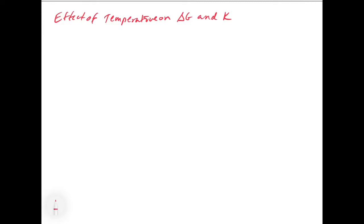In this video, we're going to look at how temperature can affect the value of delta G and K. With delta G, we normally have the equation delta G0 is equal to delta H0 minus T delta S0. This all has to be at 25 degrees Celsius and 1 atmosphere — that's at standard conditions.